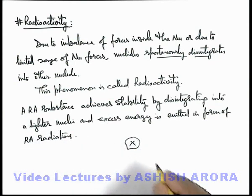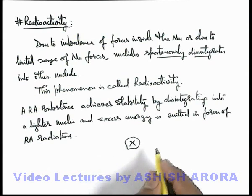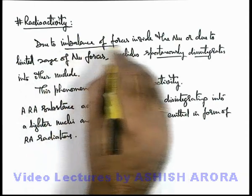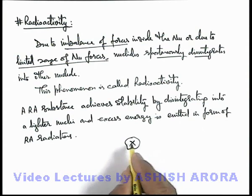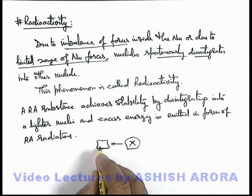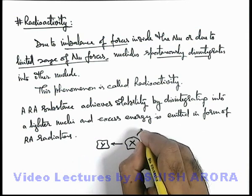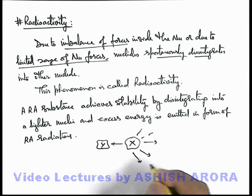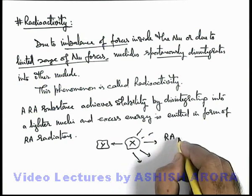Say if we have an element X which is radioactive in nature, and if this X is relatively unstable because either of imbalance of forces or due to limited range of nuclear forces, the nuclei splits or it transforms into another nuclei which is relatively smaller in size or lighter in weight, and it releases radioactive radiations which are other small nuclei in its surrounding. About radioactive radiations, we'll discuss later in detail.